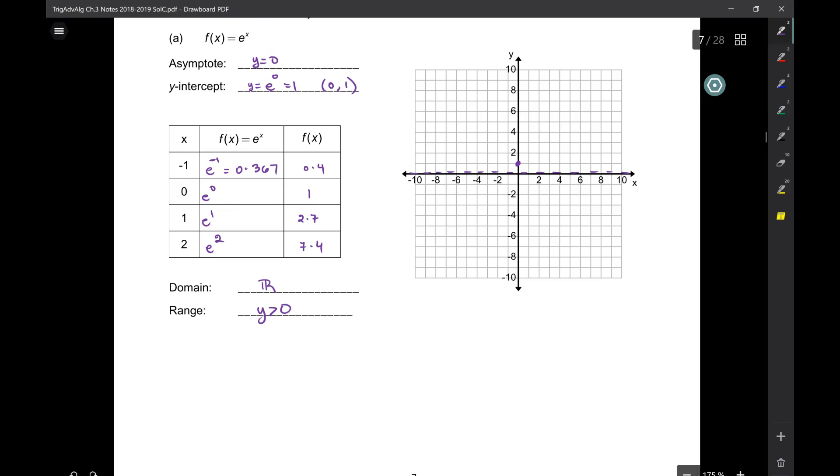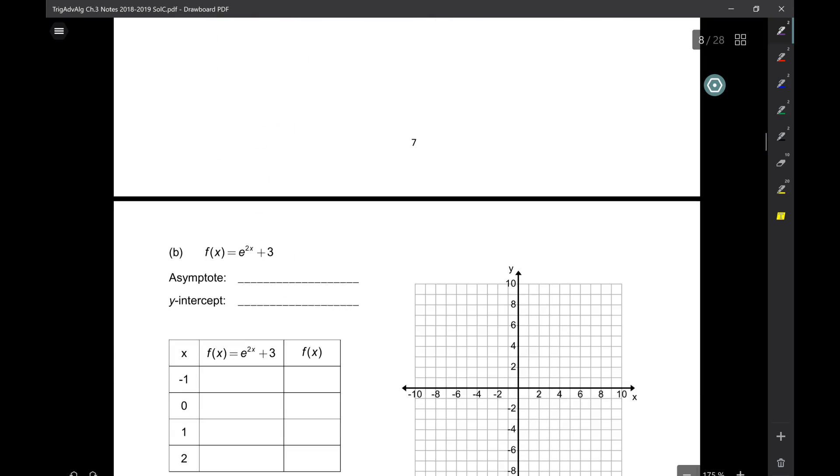When you go to graph this, at x is negative one, y is 0.4. Again, we're not looking for NASA precision. You can't really graph that precisely. Just make sure it's between zero and one. One is 2.7 so somewhere here, and then at two we're at 7.4 right there. Since you've done yesterday's homework, you're an expert at graphing these. Nothing really different. It's very easy based on what we did yesterday. The only difference is your bases are now e's.